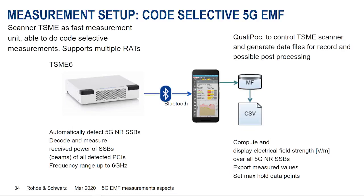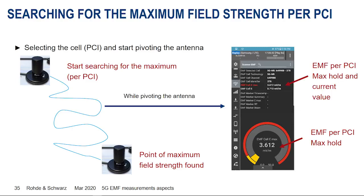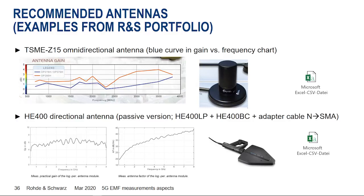We combine the scanner with antennas — for example, an omnidirectional antenna with known characteristics, or a directive antenna. Both antenna types can be connected to the TSME scanner to perform 5G EMF measurements.